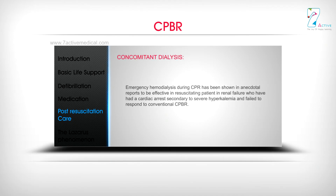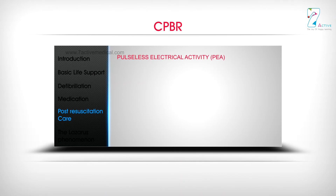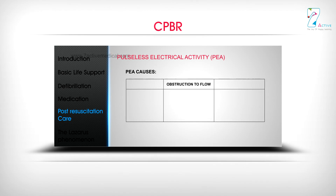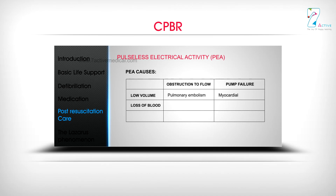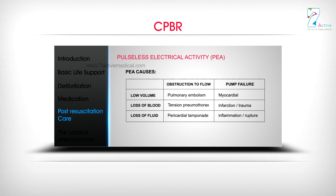Concomitant dialysis: Emergency hemodialysis during CPR has been shown in anecdotal reports to be effective in resuscitating patients in renal failure who had a cardiac arrest secondary to severe hyperkalemia and failed to respond to conventional CPR. Pulseless electrical activity (PEA) causes include: obstruction to flow, pump failure, low volume, pulmonary embolism, myocardial infarction, loss of blood, tension pneumothorax, trauma, loss of fluid, pericardial tamponade, and inflammation or rupture.